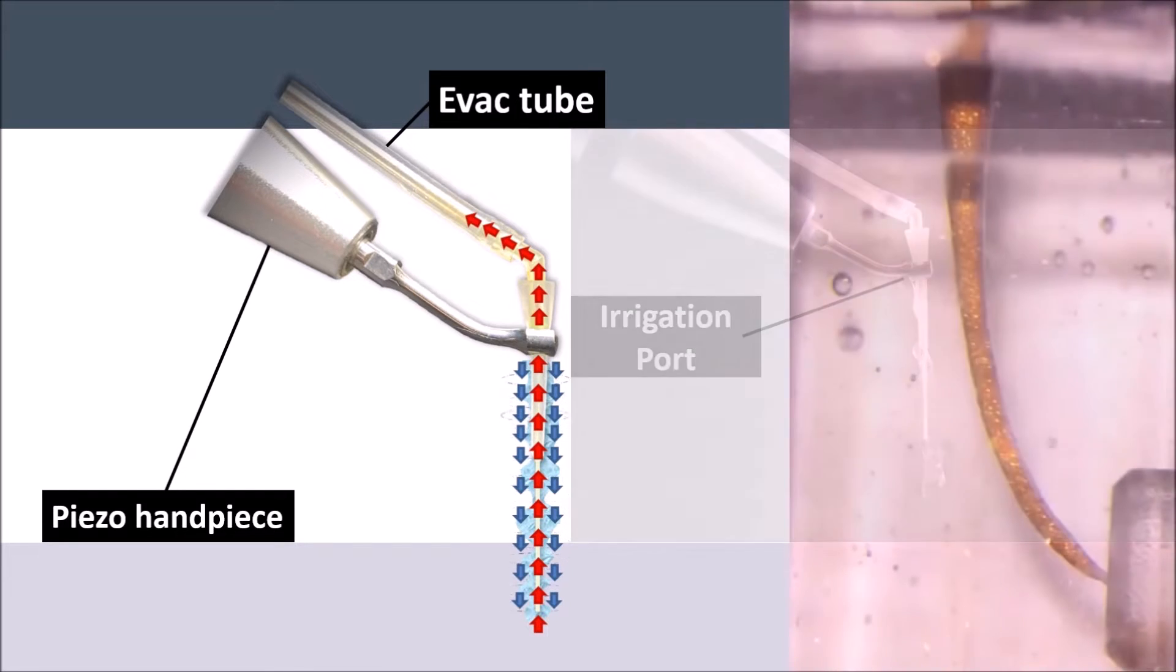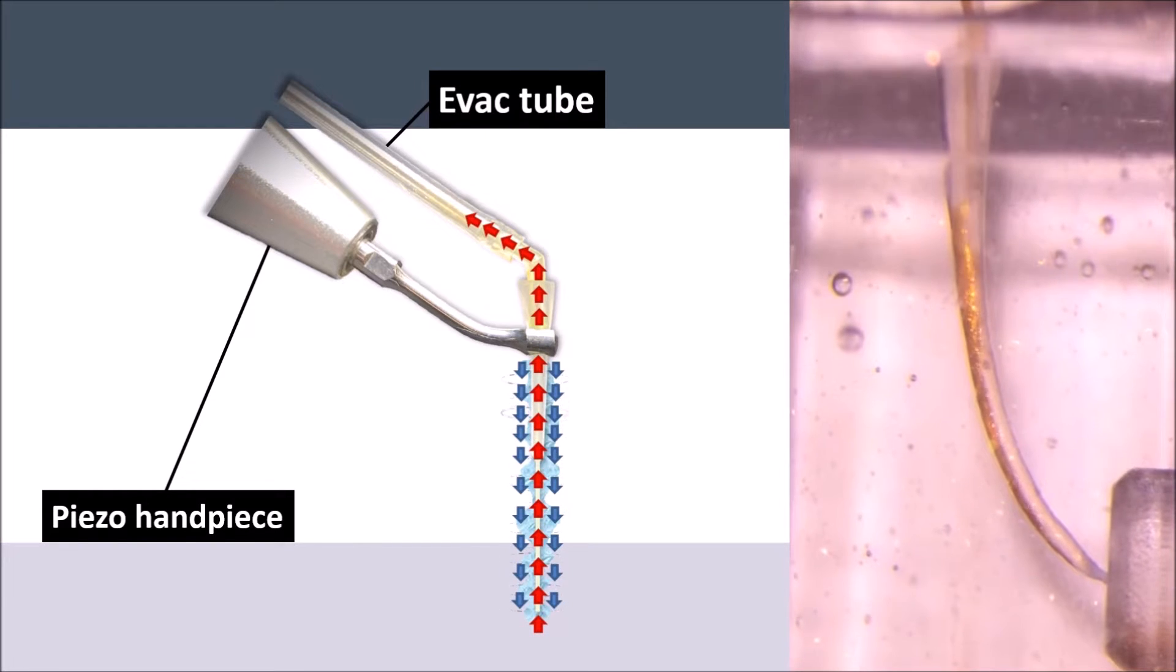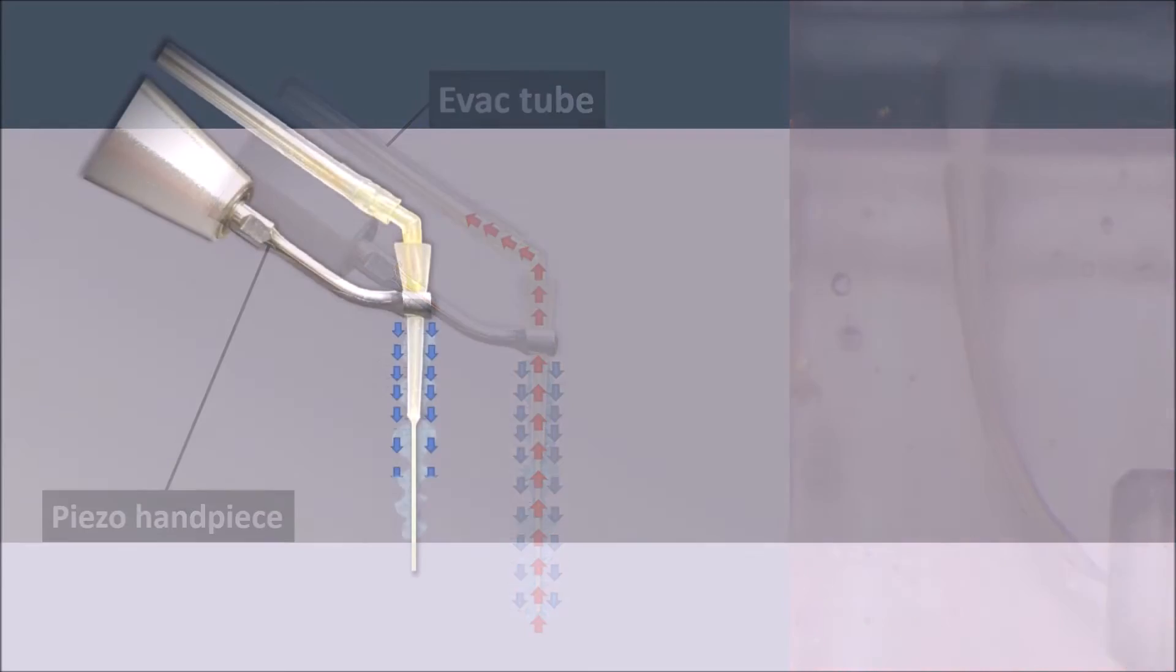The other end of the iVac connects to the evacuation tubing, which creates negative pressure powered by standard evacuation equipment. The final result is a clean canal without the risk of extrusion.